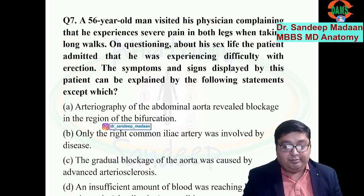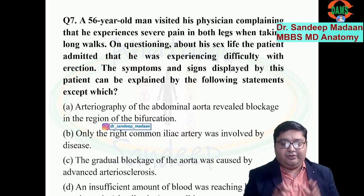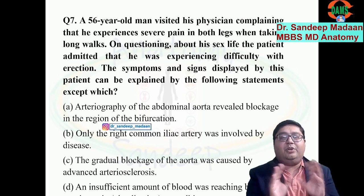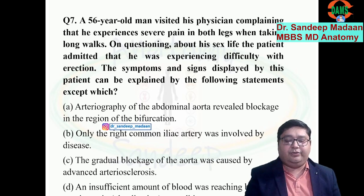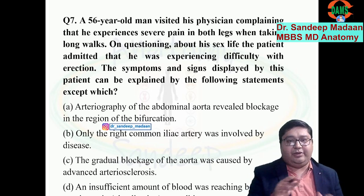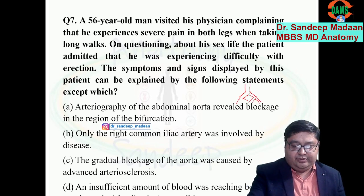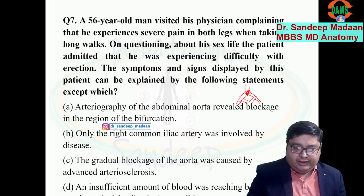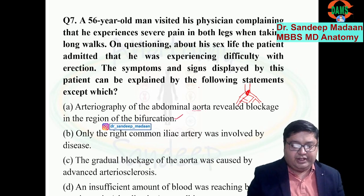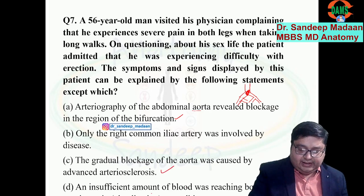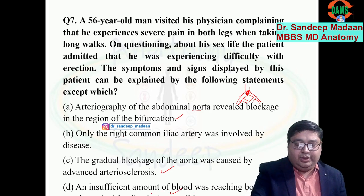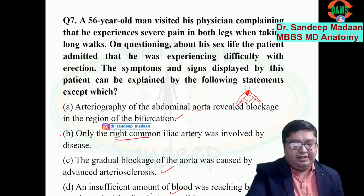A patient is having pain in both legs and sexual dysfunction. The external iliac arteries supply the lower limbs and the internal iliac artery supplies the pelvis. Since he has all these problems, the aortoiliac junction is involved — where the aorta bifurcates into two common iliac arteries, which then divide into external and internal iliac arteries. Arteriography revealed blockage at the bifurcation — gradual blockade causing claudication. But only right common iliac artery involvement cannot justify all symptoms — so B is false.